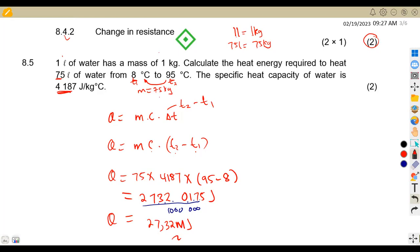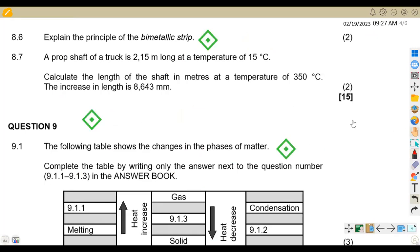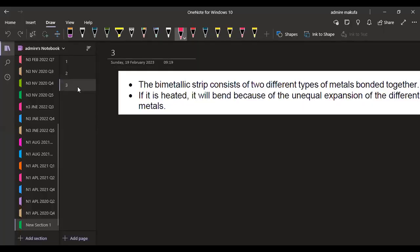Let's check the other part of the question, which is going to be 8.6. We are given to explain the principle of the bimetallic strip. I have got the answer here. The bimetallic strip consists of two different types of materials bonded together. If it is heated, it will bend because of unequal expansion of the different metals. That is the concept that you can use.